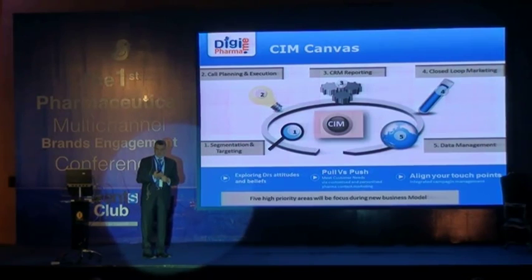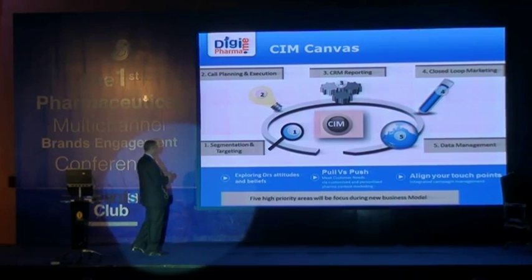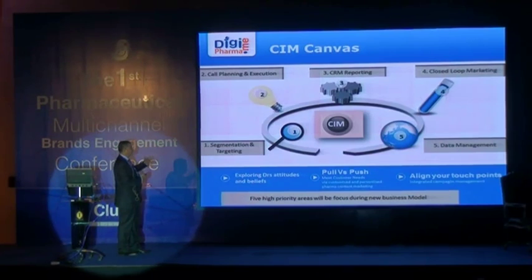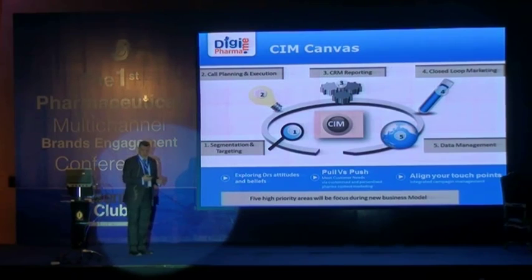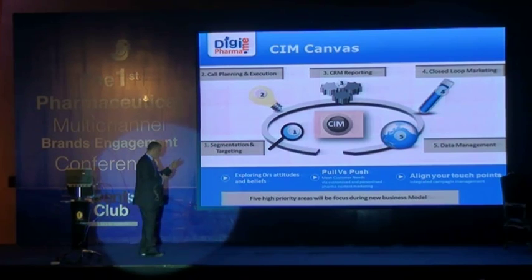The starting point is segmentation and targeting. Second, call planning and execution. Third, plan the CRM reporting. Fourth, design the closed-loop marketing. And last, data management. What's important is to go for a pull approach, avoid push technique, and align your touch points together. These five high-priority areas will be focused on during the new business model.